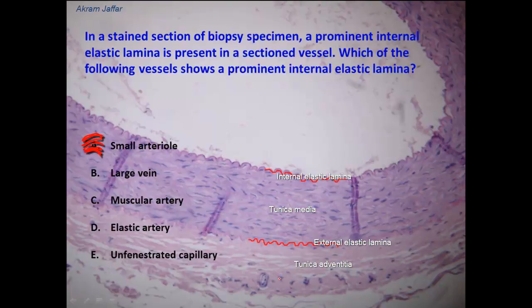This is the tunica adventitia of the vessel, which consists mainly of connective tissue, collagen fibers, and fibroblasts, and contains some nerves and vessels — vessels of the blood vessels, the vasa vasorum, like this one.